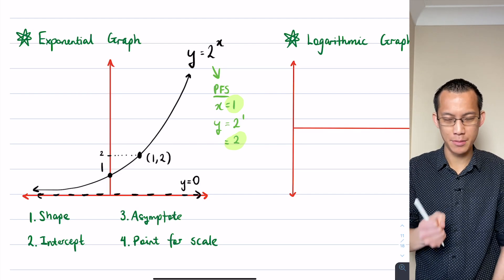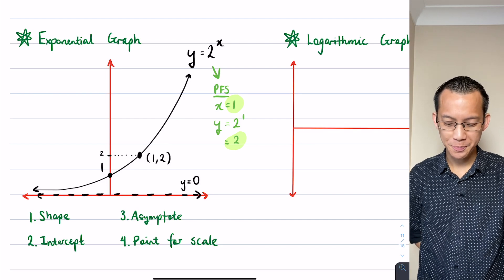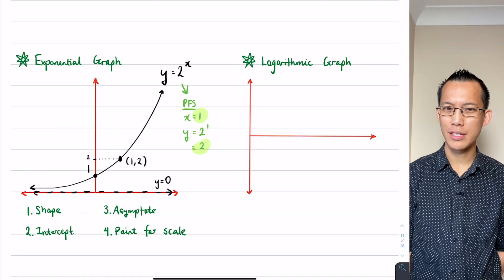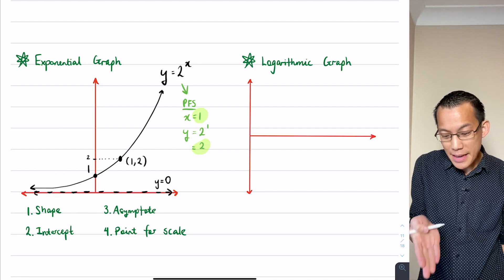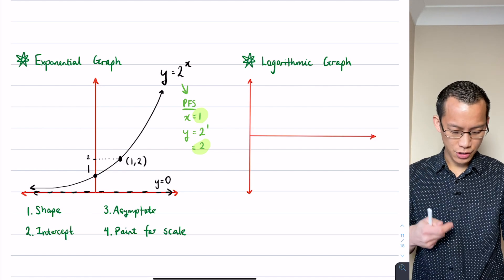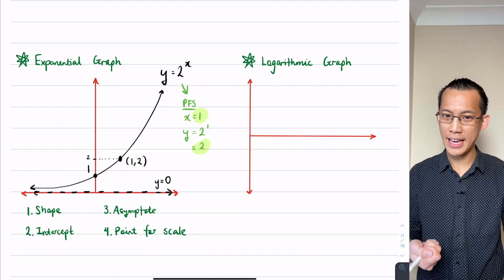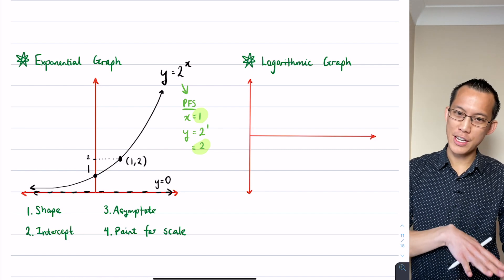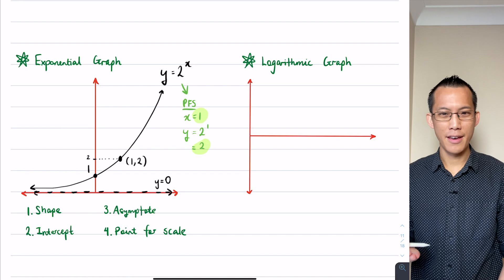Those are the four features that we're looking for: shape, intercept, asymptote, and a point for scale. Even though we're not going to look at logarithmic graphs in more detail until the second half of the lesson, it makes sense to actually really quickly have a look at them now because the four features are the same. Exponential graphs and logarithmic graphs are kind of two sides of the same coin.